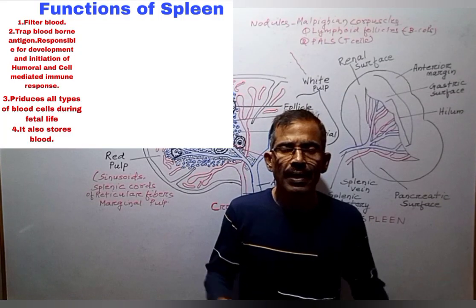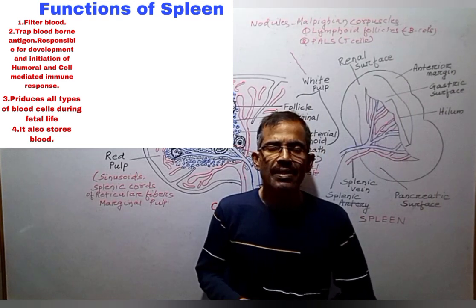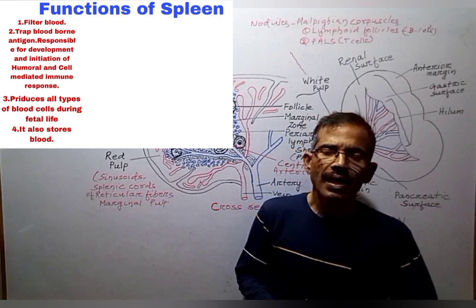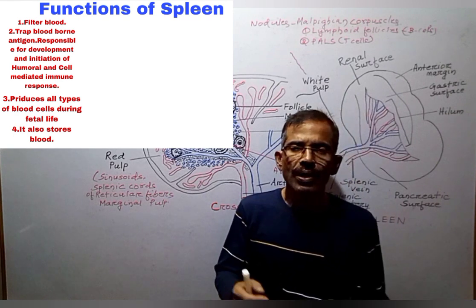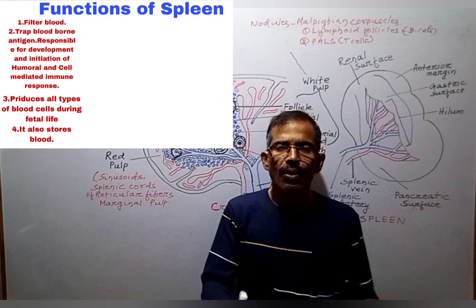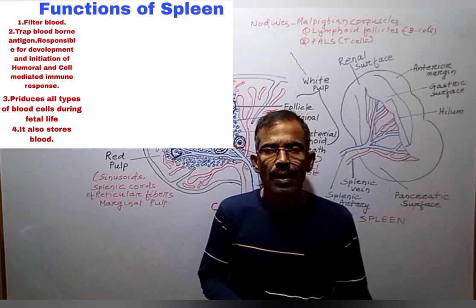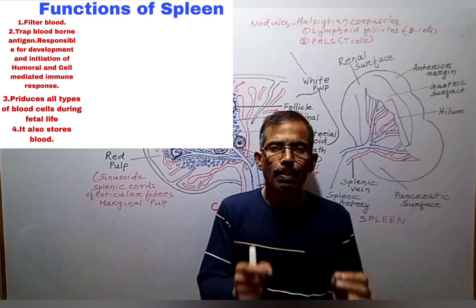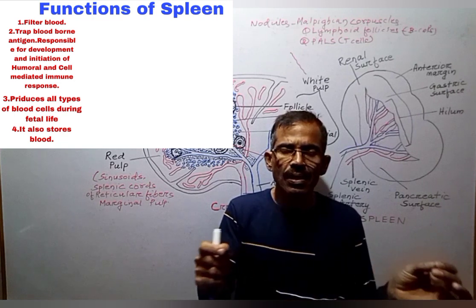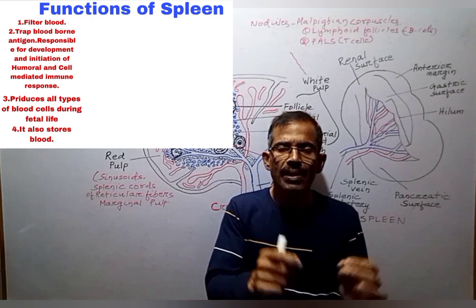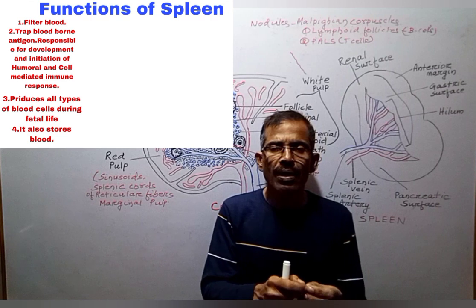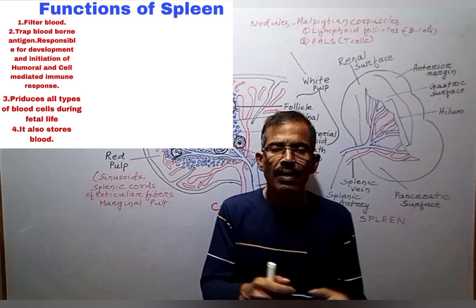Functions of spleen: First, spleen is considered as the graveyard of worn-out blood cells, as the red pulp is mainly concerned with the mechanical filtration of blood and destroys old and dead red blood cells. Second, spleen traps bloodborne antigens; it is responsible for development and initiation of humoral and cell-mediated immune responses. When the spleen is absent, the individual becomes susceptible to bloodborne bacterial infections.